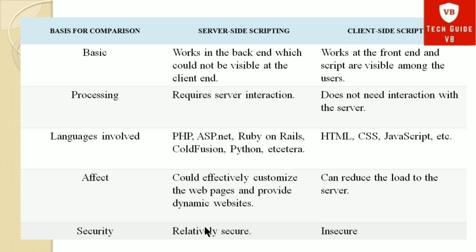Now we will see some differentiation points between server-side scripting language and client-side scripting language. On the left side the first column shows the comparison parameters. For the basic comparison: server-side scripting language works in the backend and is not visible at the client end, while client-side scripting works at the front end and scripts are visible among the users. For processing: server-side scripting requires server interaction, while client-side scripting does not need interaction with the server.